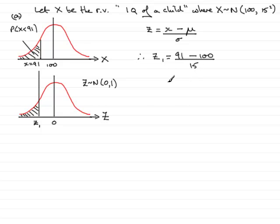And if you work that out in the calculator, you'll find that you get that z1 is minus 0.6. I'll just pop in there that z1 is minus 0.6.